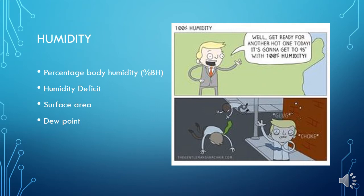Here's a nice little joke for everybody. Here's a weatherman who says, well, get ready for another hot one today. It's going to be 95 degrees with 100% humidity. Just remember, everyone down here is dead because 100% humidity means you'd be underwater.